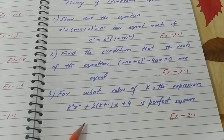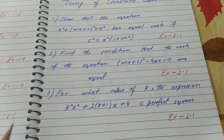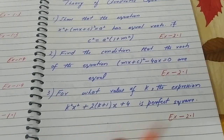Question number 3: For what values of k is the expression k²x² + (2k + 1)x + 4 a perfect square? This is also Exercise 2.1.